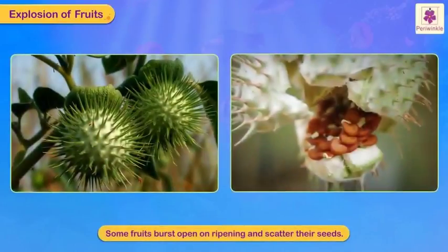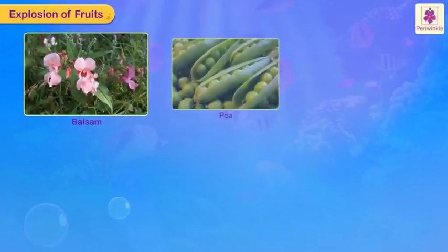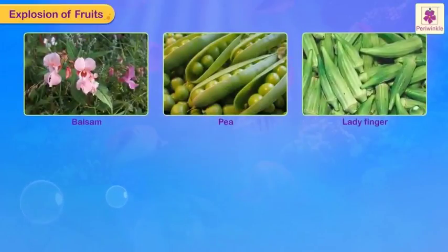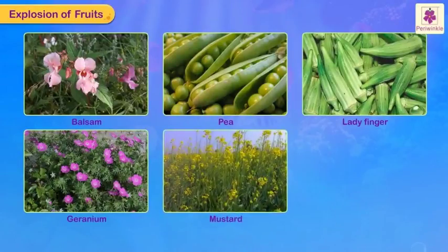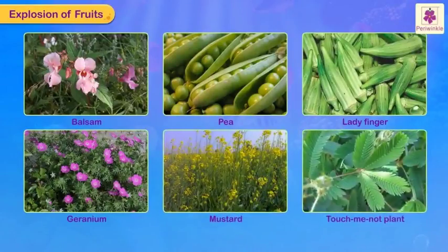Some fruits burst open on ripening and scatter their seeds. Balsam, tea, lady finger, geranium, mustard, and touch-me-not plants disperse their seeds in this way.